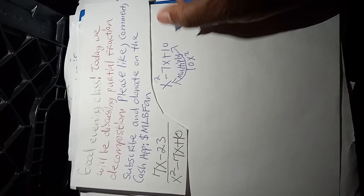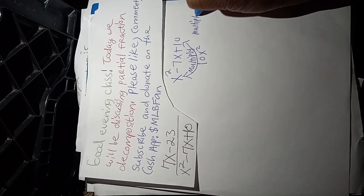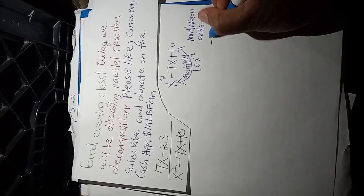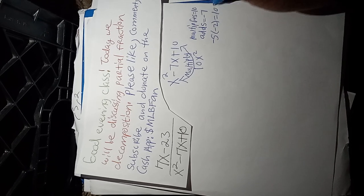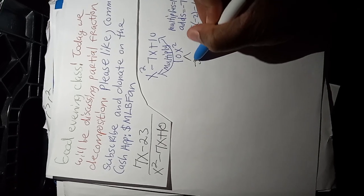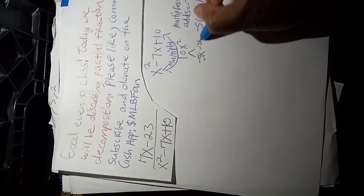And we need something that multiplies to equal 10 and adds to equal negative 7. So negative 5 times negative 2 is equal to 10, and negative 5 plus negative 2 is equal to negative 7. So we found it. So 10x squared will be replaced with negative 5x and negative 2x, since negative 5x times negative 2x is equivalent to 10x squared.